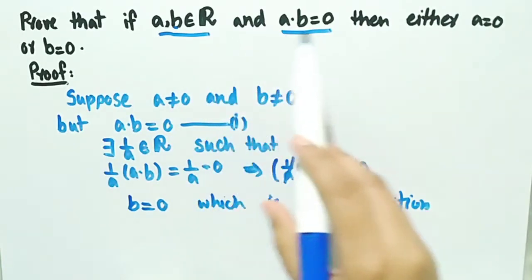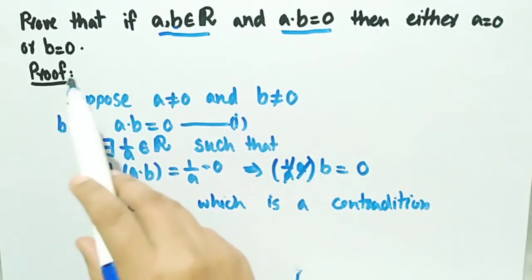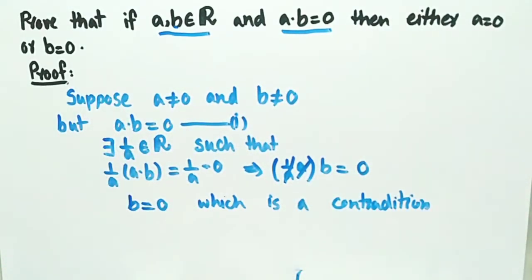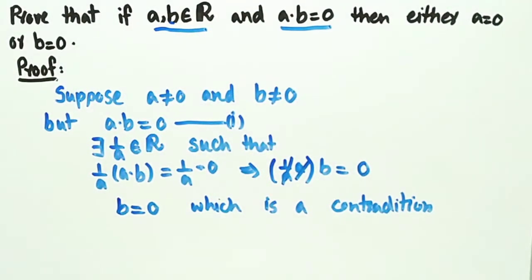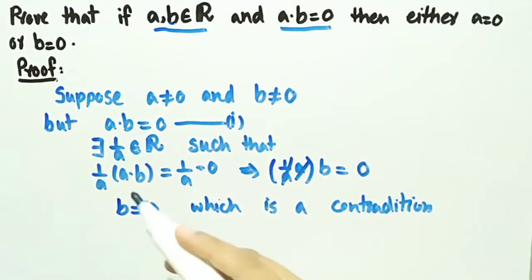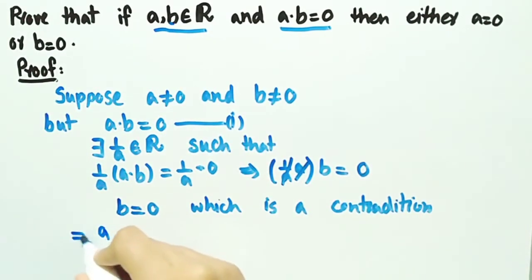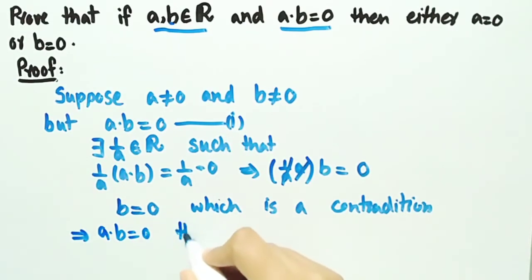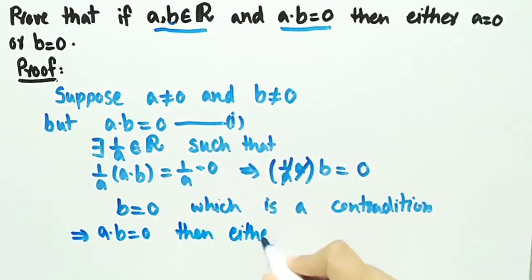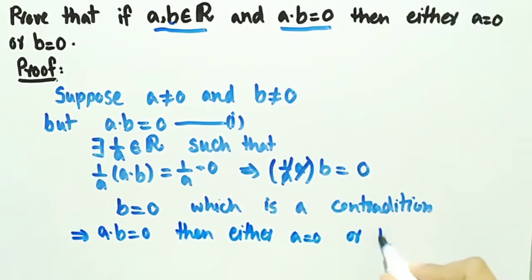So if the product ab = 0 and a and b are real numbers, then one of them must be equal to zero. From here we conclude that for any real numbers a and b, whenever ab = 0, then either a = 0 or b = 0 — both cannot be non-zero.